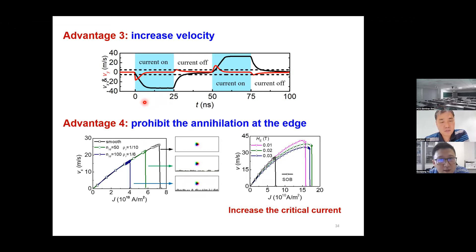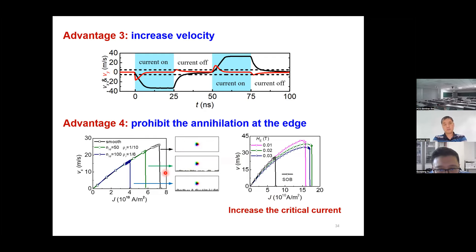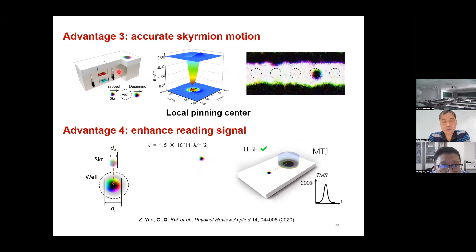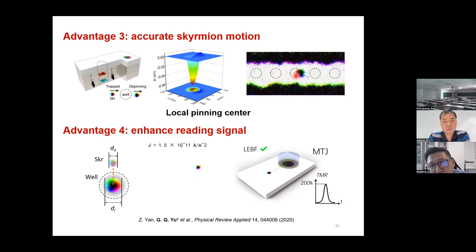There are several advantages. First, the skyrmion moving next to the domain wall can have increased speed. Second, because of the domain wall we can increase the critical driving current — for a physical boundary, the skyrmion is easily destroyed at the boundary, but when using a domain wall boundary we can increase this critical current, eventually increasing the skyrmion velocity. On the other hand, we can also create certain pinning centers in the middle of the channel by introducing in-plane exchange bias, causing an energy valley that makes the skyrmion stable at specific points. Then we can move the skyrmion very steadily between different sites.